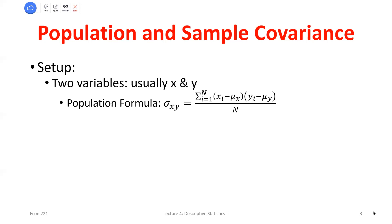This is similar to the variance. Remember, with the variance we took the deviation from the mean — that's all we're doing here for the X variable. We're taking every observation's value for X and subtracting the mean. But now we're not squaring it, so it matters which side of the mean we're on — whether this is positive or negative. We then multiply that by the deviation of the Y variable from its mean for every single observation. If X is income and Y is years of education, for every person I record both values, find each deviation from its mean, multiply them, and add up all those products. Then divide by the number of observations.